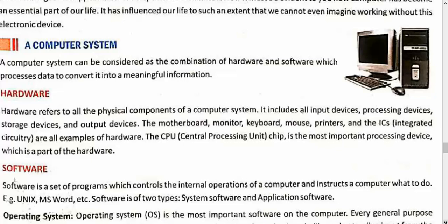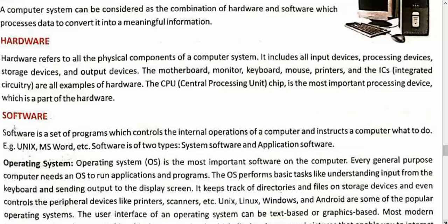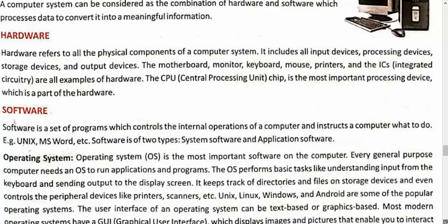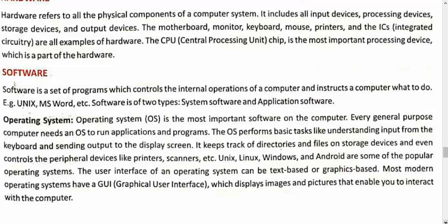There is a complete chapter on types of software, but briefly — there are two types of software: system software and application software. The most important system software for your computer is the operating system. Without an operating system, no computer can work. The most popular operating system is Windows. For smartphones it is Android; for other phones, iOS. Unix, Linux, and Macintosh (for Apple MacBook) are also operating systems. Most of these are GUI — Graphical User Interface — where you work by touch or click. But there is also CUI — Character User Interface — where people give instructions by typing.